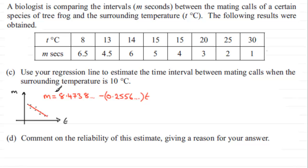And what I've done here is I've just sketched out the line of regression that we calculated in part B and its equation here. And so all we've got to do is substitute when t equals 10 into here to get the value of m.